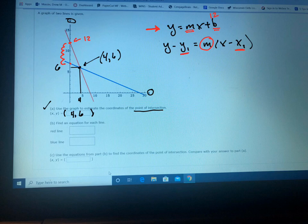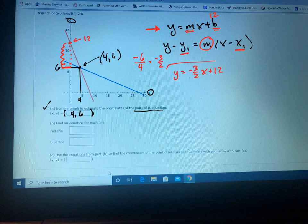Going to the intersection point, so 6 down and 4 over. The rise is negative 6 and the run is positive 4, which reduces to negative three halves. So your equation is Y equals negative three halves X plus 12. That's your red equation.